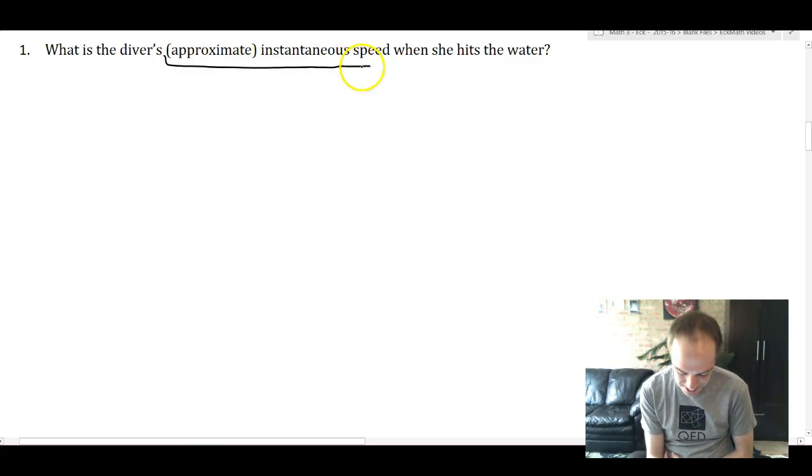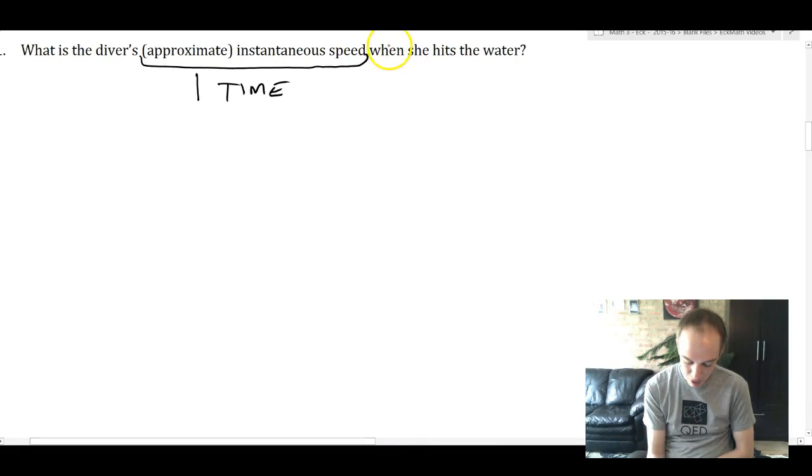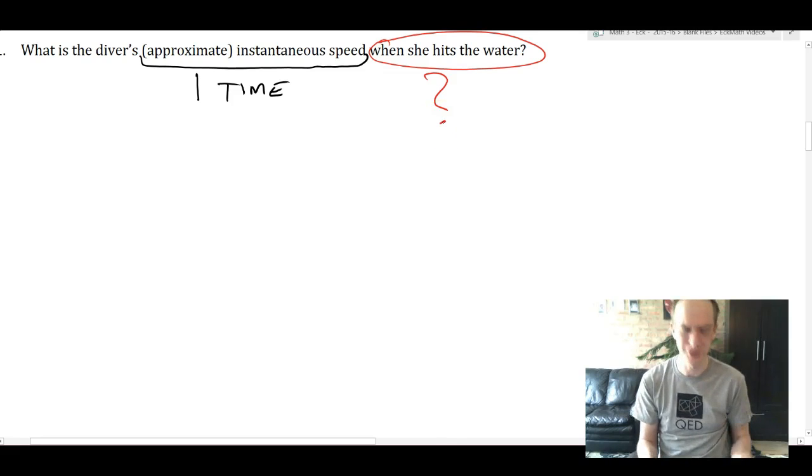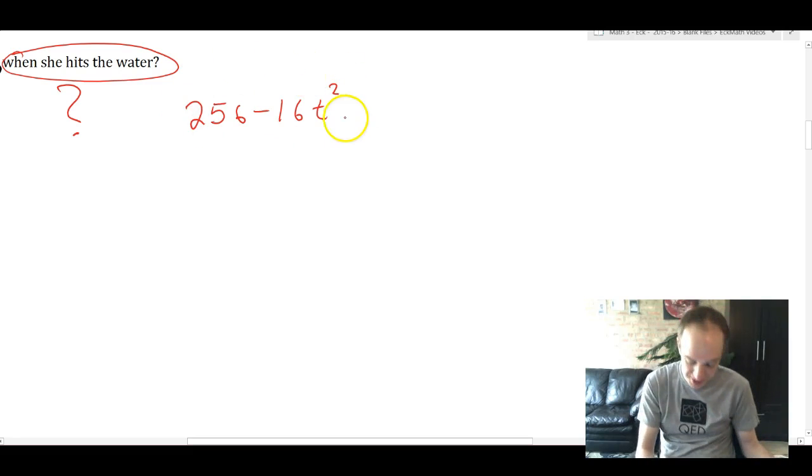Instantaneous or approximate instantaneous speed needs one time to start with. In this problem, it doesn't look like they gave us a time except it says when she hits the water. So the first question is, when does she hit the water?